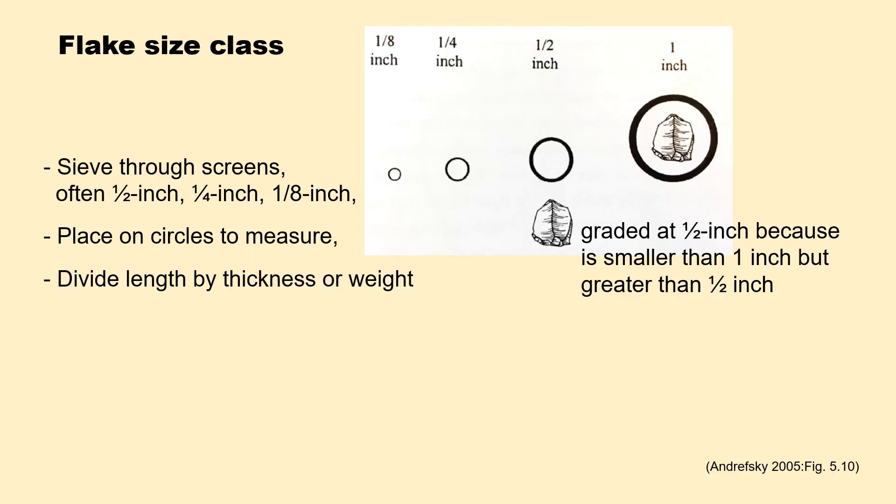Flake size class. One way to derive flake size class is to sieve your flakes through screens — usually one-half inch, one-quarter inch, and one-eighth inch nested screens. One problem with this, however, is that if the flake is on the diagonal or lengthwise going down with the skinny end down, you will not get accurate measurements. A more accurate way would be to place each flake on a circle to measure it — in this example, the flake fits within the one-inch but is bigger than the half-inch, therefore it's graded at half-inch in size. Another method is to divide length by thickness or weight.